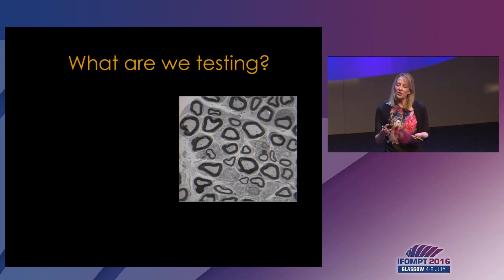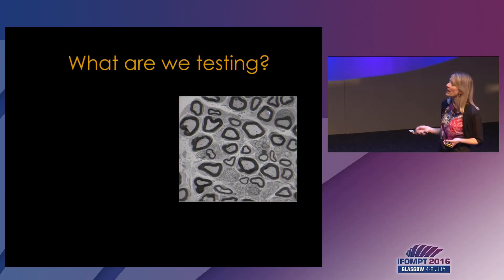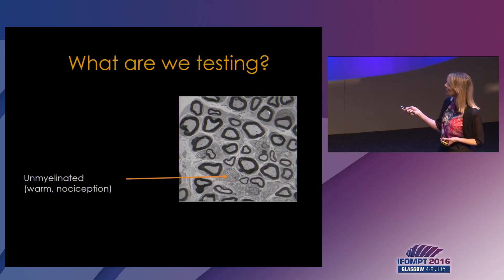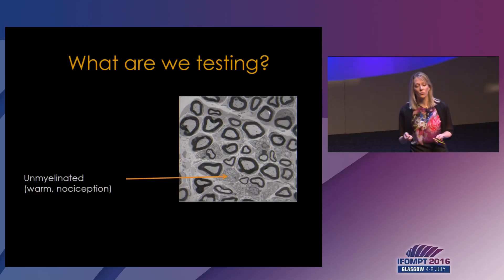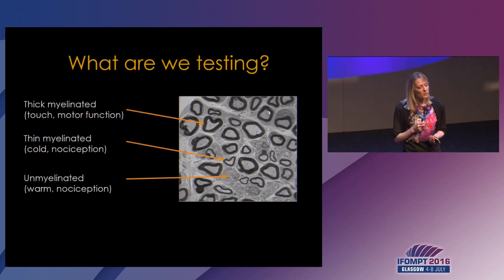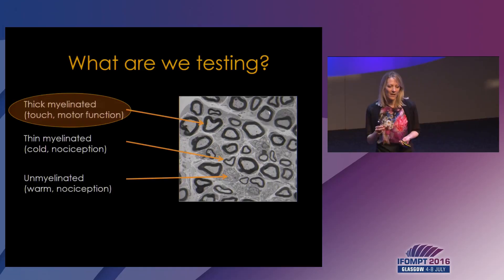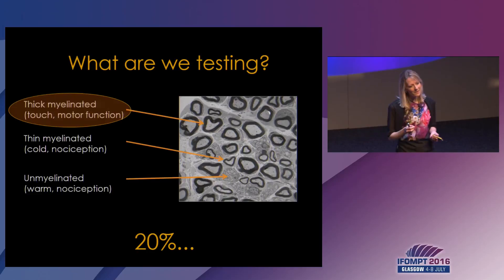To answer this question, I'd like to take you back to the actual anatomy of a nerve trunk. This is an electron microscopy image of a sciatic nerve of a rat. You can see the thick myelinated large axons, the small unmyelinated axons such as C fibers responsible for warm sensations and nociception, and the thin myelinated fibers mediating cold and nociception. When we do our standard bedside neurological examination, we exclusively test this thick myelinated fiber population — and even standard electrodiagnostic tests do the same. Notably, thick myelinated fibers make up only 20% of a nerve trunk, meaning we may be neglecting 80% of a nerve trunk when relying on these tests.